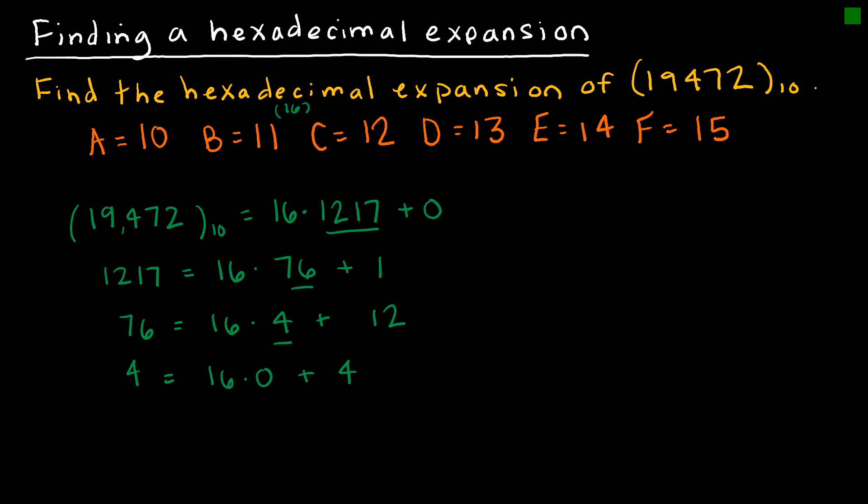So just as before, I'm very interested in looking at these values. And again I'm going to go in the upside down order. So 4, 12, 1, 0. Now obviously I'm not going to leave it like that because 12 is represented by C.